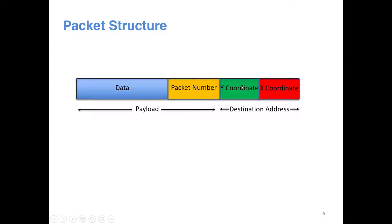The size of the XY coordinate depends on how big your NOC is. The number of bits will be log base 2 of the width and height of the NOC. The packet number is also a function of the NOC size, so that at any given point in time no two packets with the same packet number exist within the NOC. That depends on the NOC size as well as the worst-case latency of the NOC.